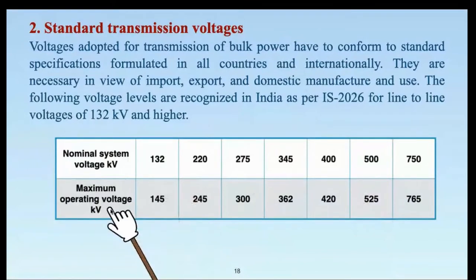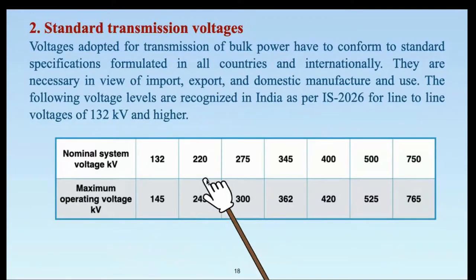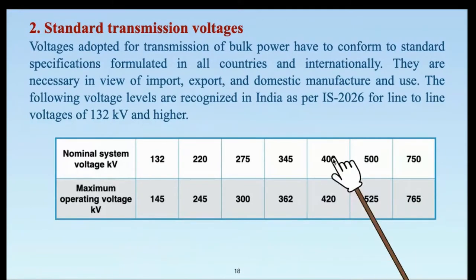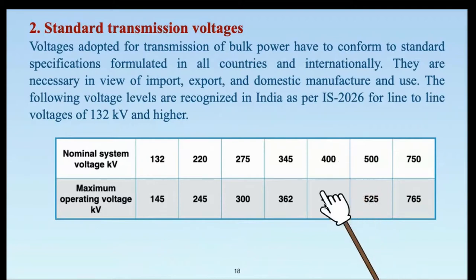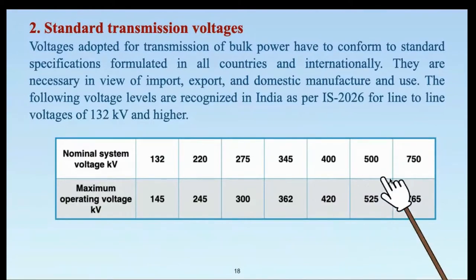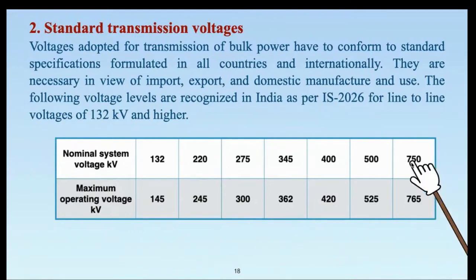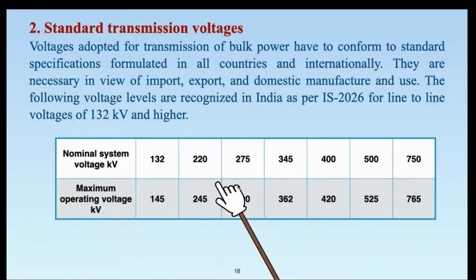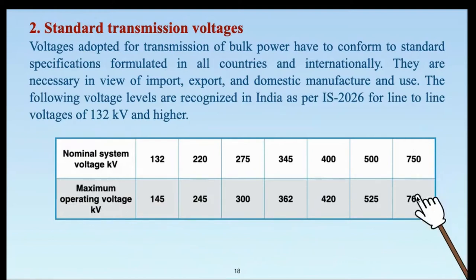At 132 kV, the difference between maximum operating voltage and nominal system voltage is nearly 10 percent. As we move higher up the scale to 400 kV, the difference between 400 kV and 420 kV is only five percent. At still higher voltages — 750 kV and 765 kV — this difference may be around two percent. So as we move from 132 kV to higher voltages, the margin between nominal system voltage and maximum operating voltage becomes very very small.